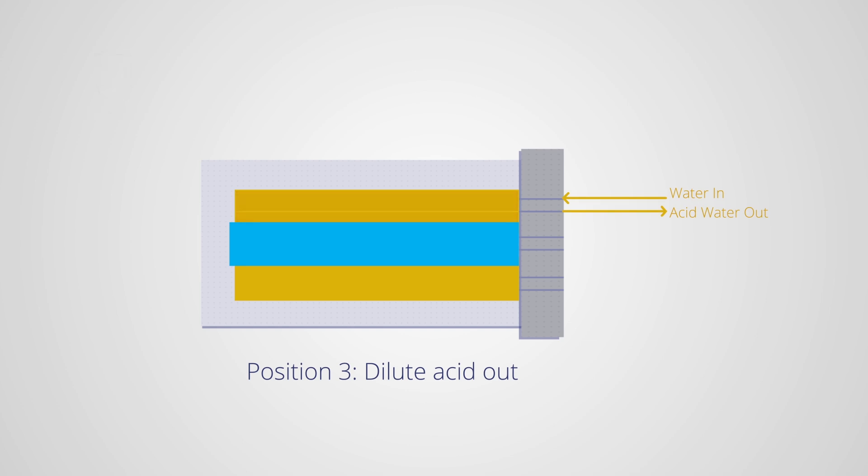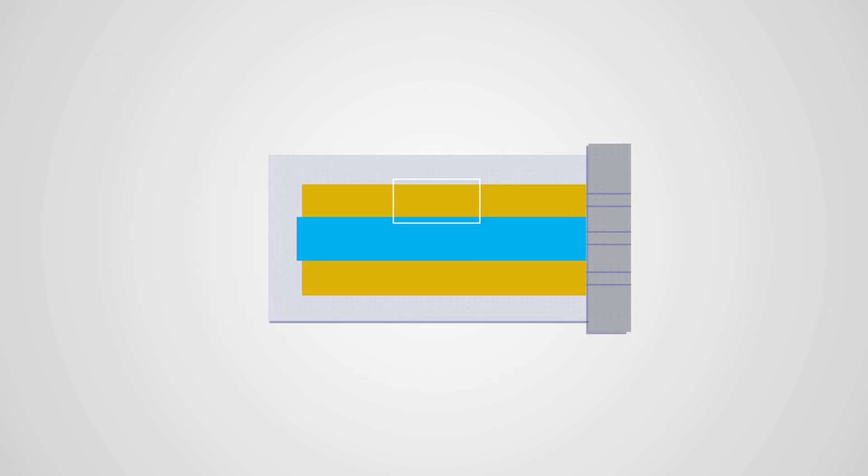Finally, in the last step of the suppressor process, the chamber moves to a third position, where it is rinsed with water to eliminate unbound protons.